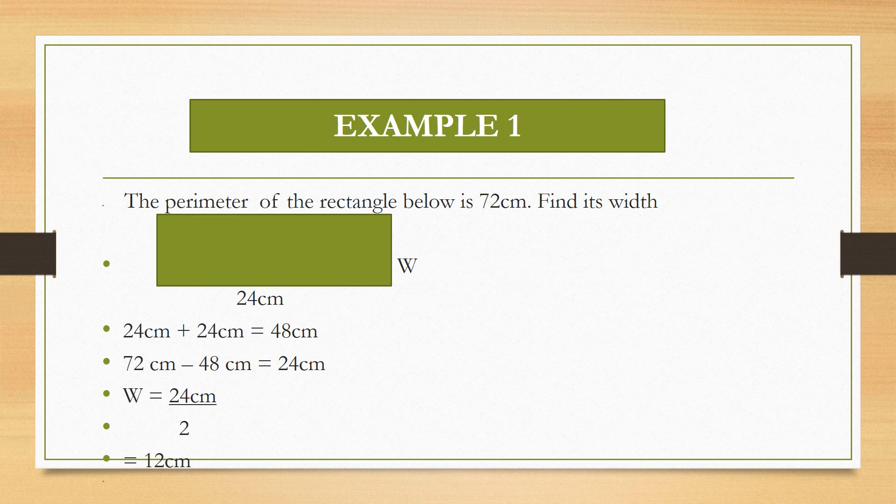Our first example for today: the perimeter of the rectangle below is 72cm. Find its width. As a good student, just know that opposite sides are equal, and I want you to identify the sides that they have given you. In this case, they have given you 24cm, so you can also write 24cm up here because opposite sides of a rectangle are equal. If you add 24 plus 24, you will get 48cm.